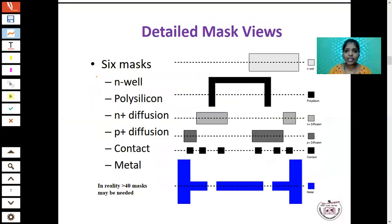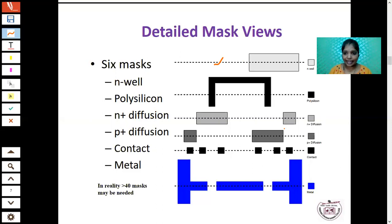For detailed mask layers, we use six different masks. First is the N-well mask: to form the PMOS transistor in the P-substrate, we diffuse N-type material, represented by one pictorial layer. Second is polysilicon, connected to the gates of both NMOS and PMOS transistors, represented by the black shade. Third is N+ diffusion — to form the NMOS transistor, heavily doped N-type material is diffused, represented by light gray. Fourth is P+ diffusion for the PMOS transistor, represented by dark gray. Fifth is the contact, for connecting terminals. Sixth is the metal layer, for connecting terminals together.